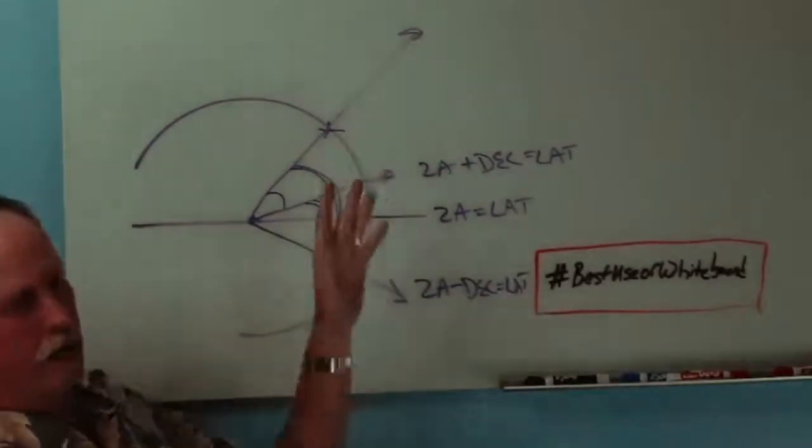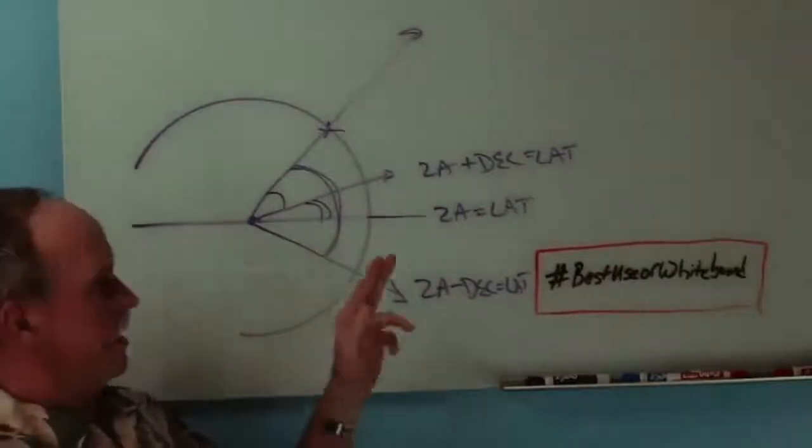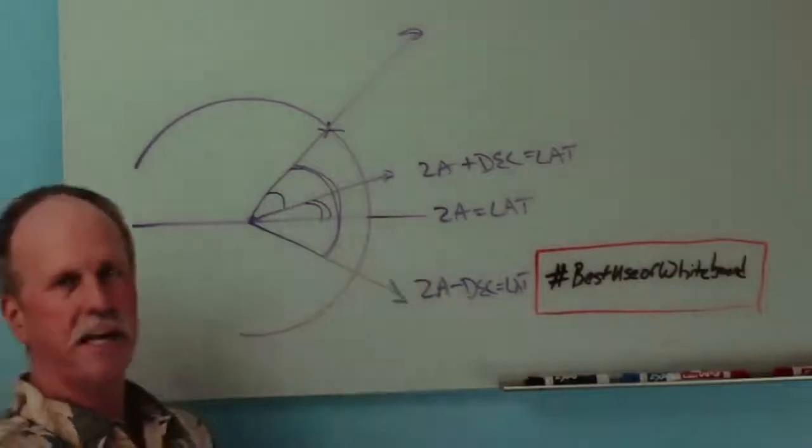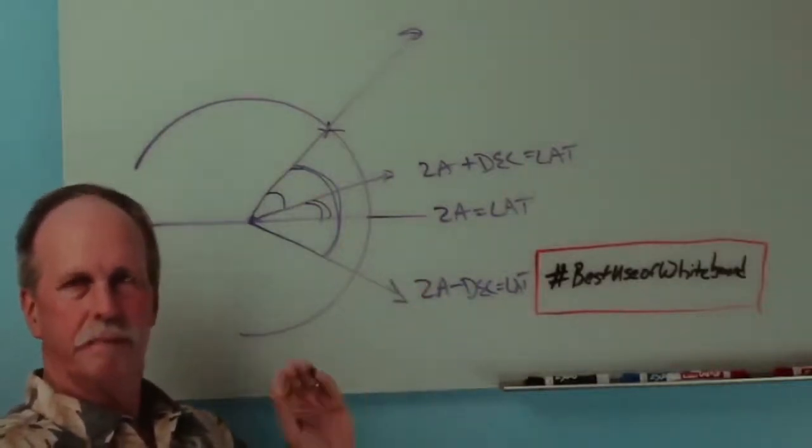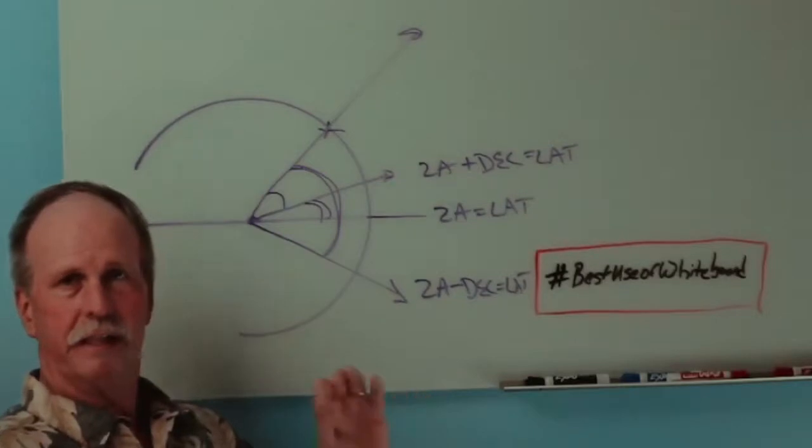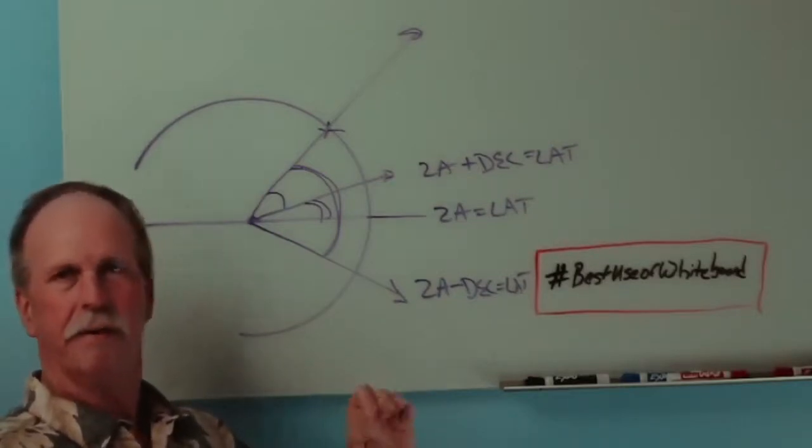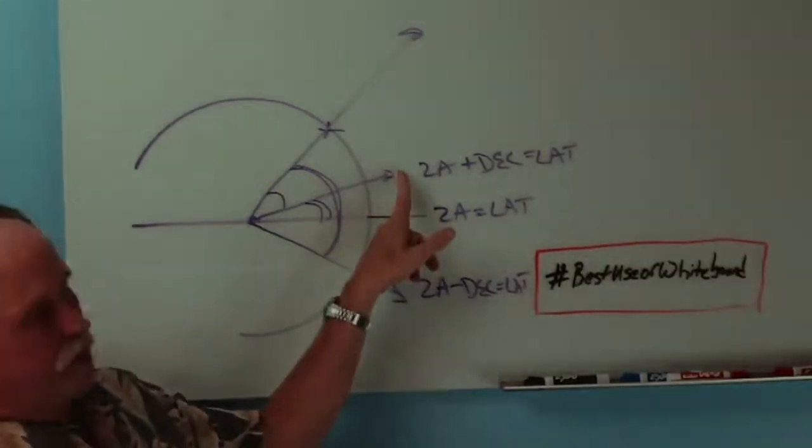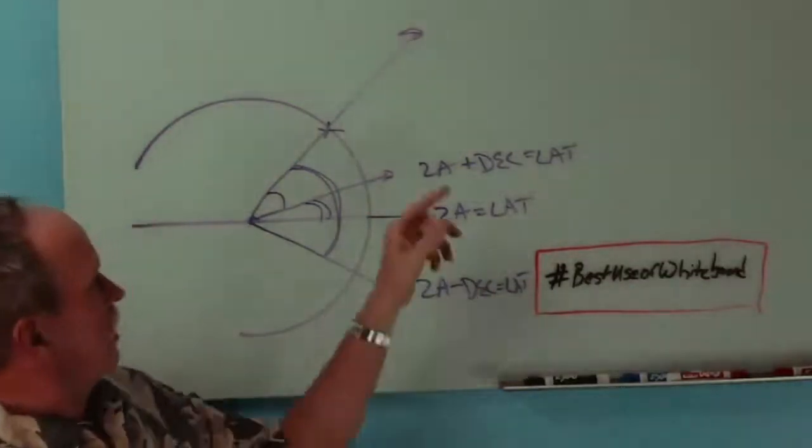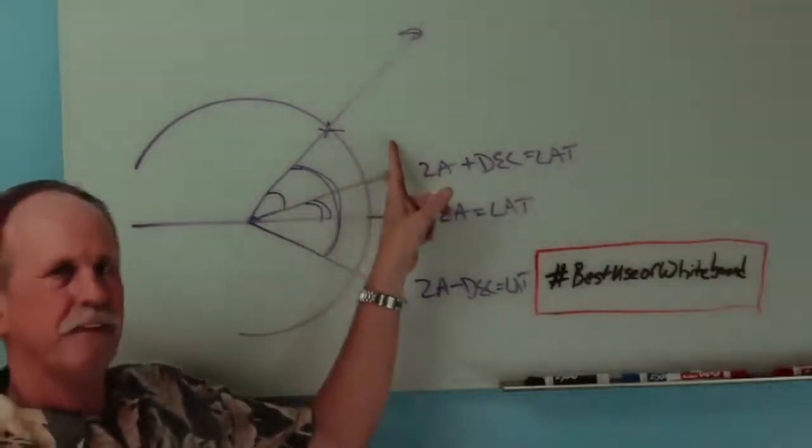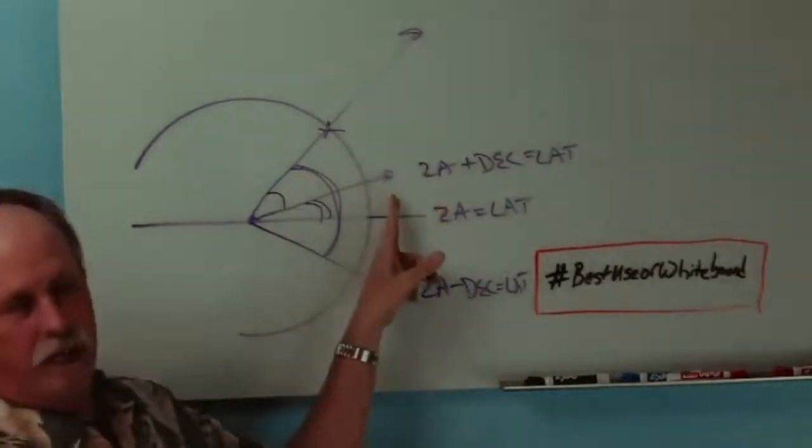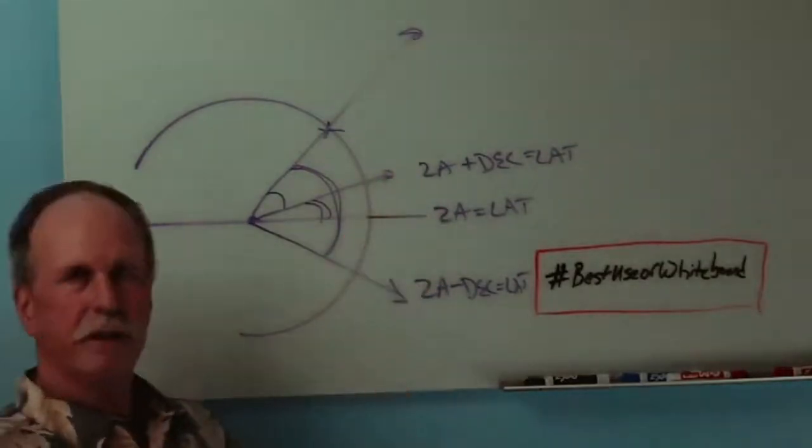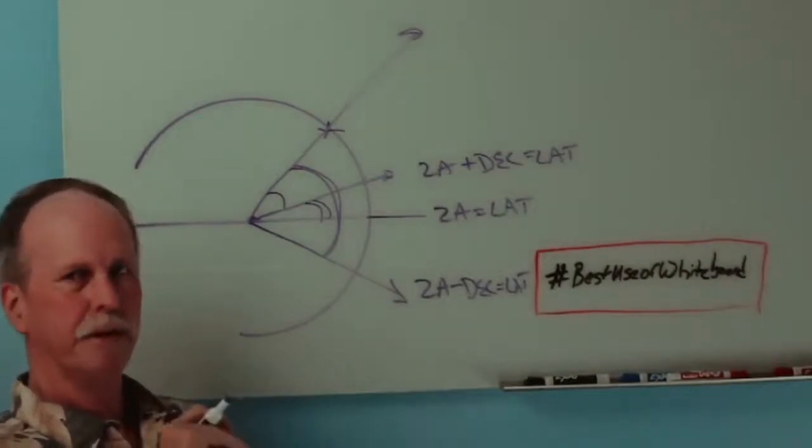So, the first thing that you have to say is, well, what hemisphere am I in? Second, is the Sun between me and the equator? Is it on the equator? Or is it on the other side of the equator? And for that, you look up the declination of the Sun in the Naval Almanac, and it'll tell you what it is every hour of every day of the year. So, for example, when I was in Florida, the Sun was north of the equator. My zenith angle that I measured was about 15 degrees. The declination was also about 15 degrees. So, you add them together and you found that my latitude was approximately 30 degrees.